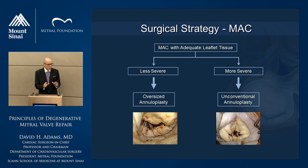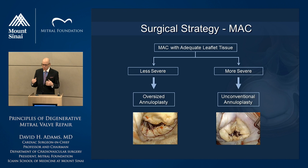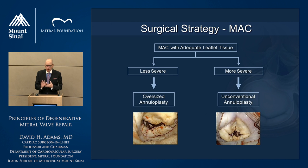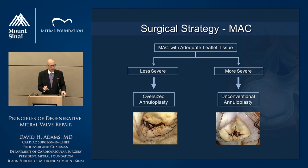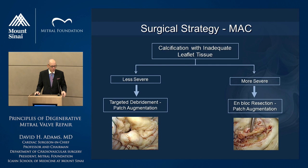With mitral annular calcification, in less severe cases we tend to oversize the annuloplasty — that's why you can change your annuloplasty strategy based on leaflet height. We'll preserve excess leaflet height and oversize the annuloplasty because the calcium will be inside the orifice, behind the hinge point. You have to be thoughtful about not putting in too small a ring. We may take a ring, turn it upside down, or only plicate one side of the valve where we can place sutures. Usually we attempt some sort of annuloplasty, but oftentimes you can't do a conventional one.